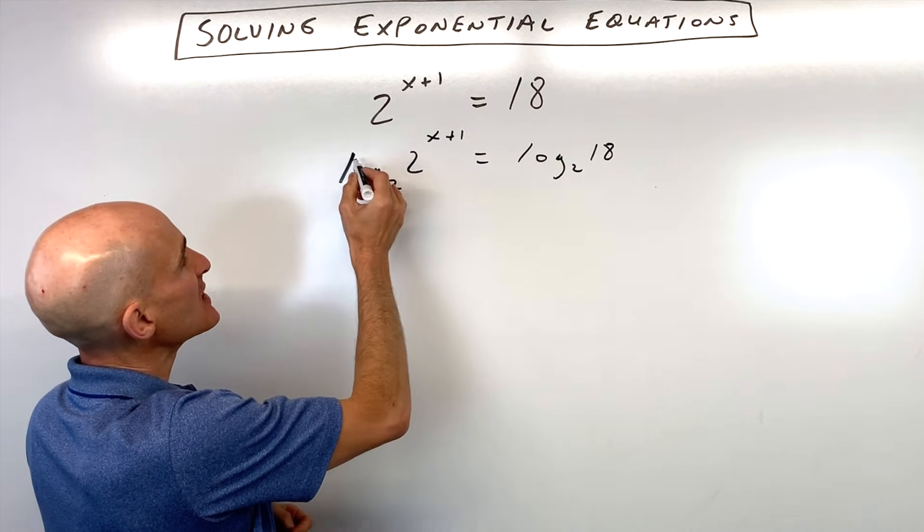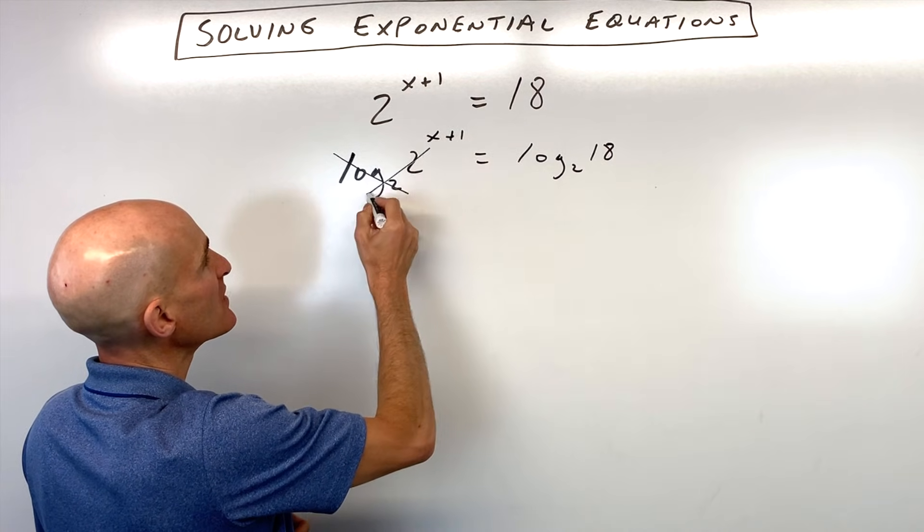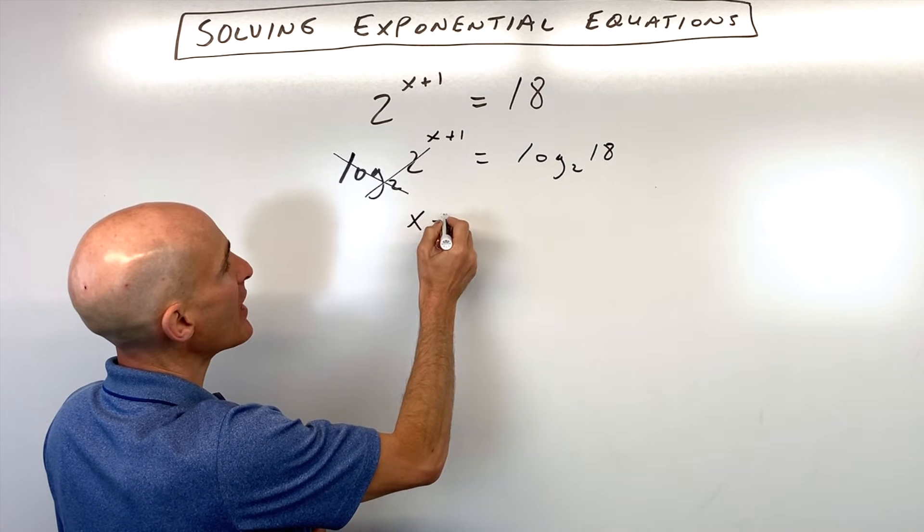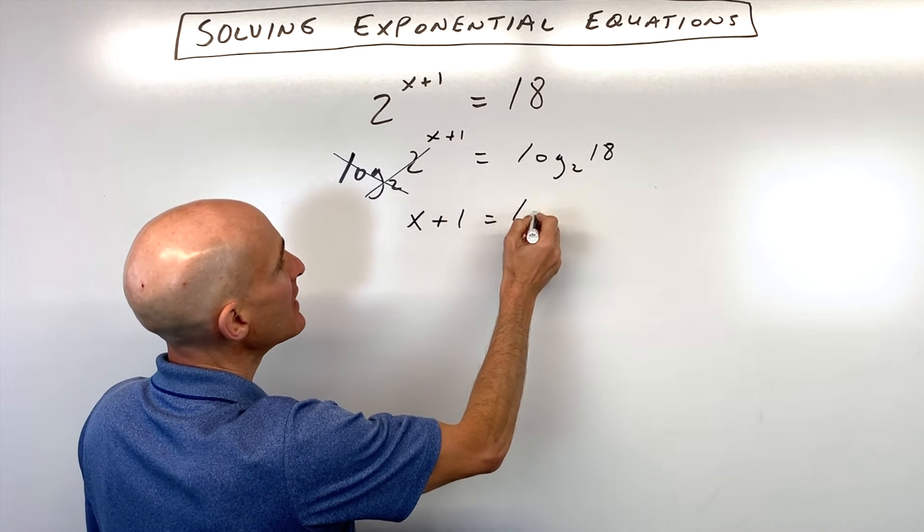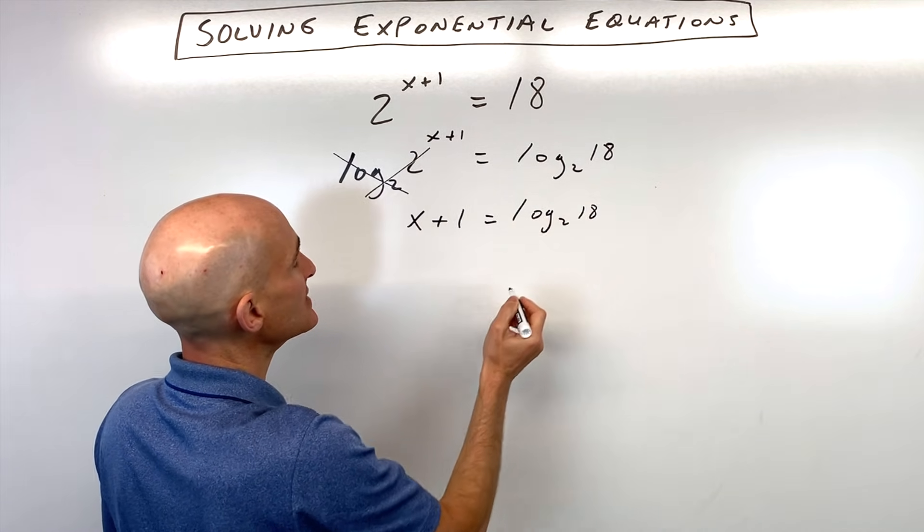The reason I'm doing that is because log base 2 and an exponential function with base 2 are inverses—they cancel one another out. So we have x plus 1 equals log base 2 of 18.